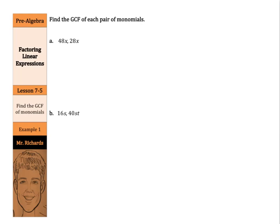Remember, a monomial is an expression that is a variable, a number, or a product of numbers and/or variables. You can see a couple of examples here with 48x, 28x, 16s, and 40st. To factor a number means to write it as a product of its factors. A monomial can be factored using the same method you would use to factor a number.